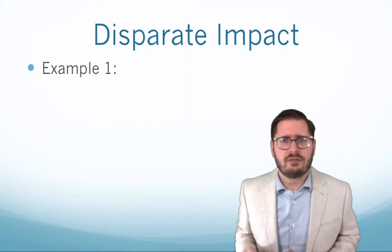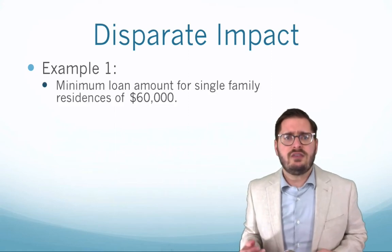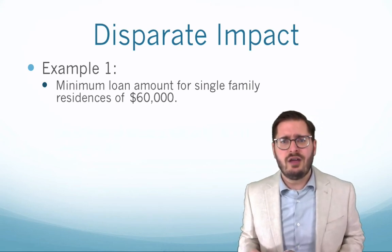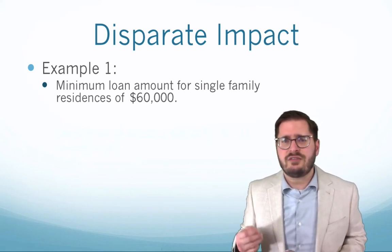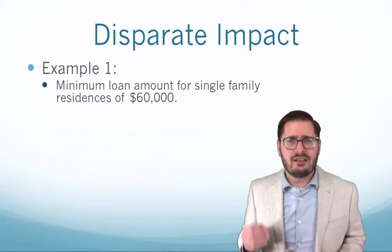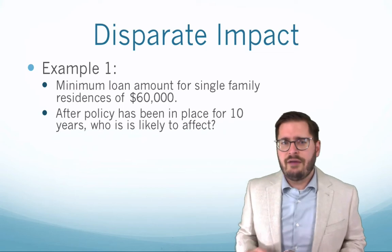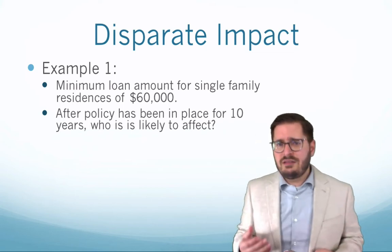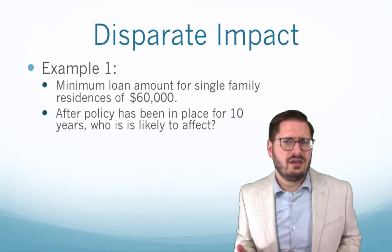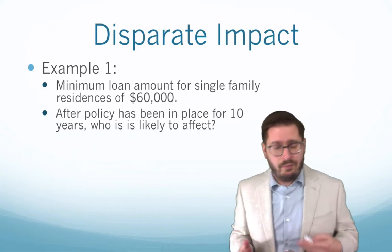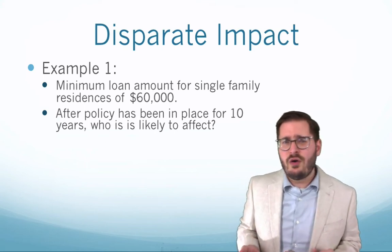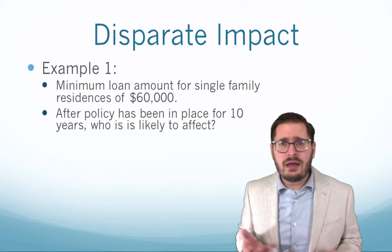Let's look at a couple of examples of disparate impact. The first example: let's assume that there is a product where we have a minimum loan amount for a single family residence of $60,000. So we won't offer loans less than a loan amount of $60,000. After this policy has been in place for about 10 years, to make the example better, increase that minimum loan amount up to $400,000 or $300,000.